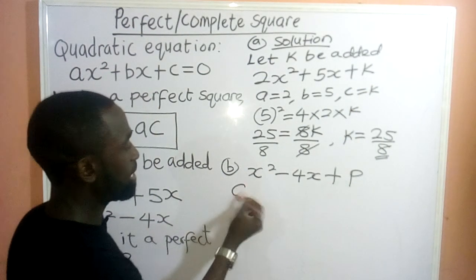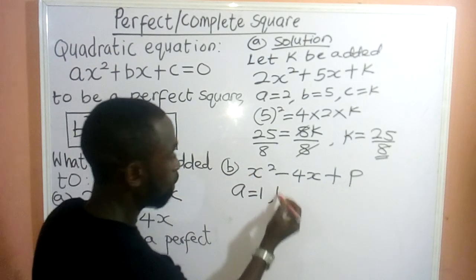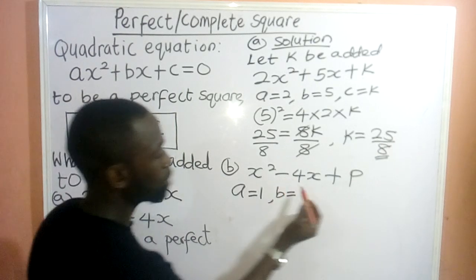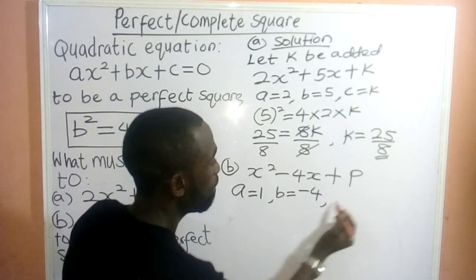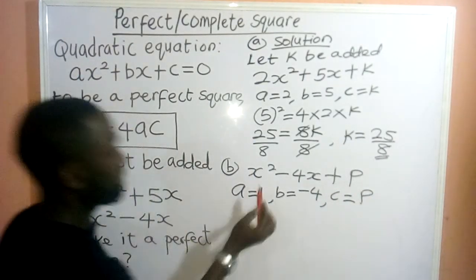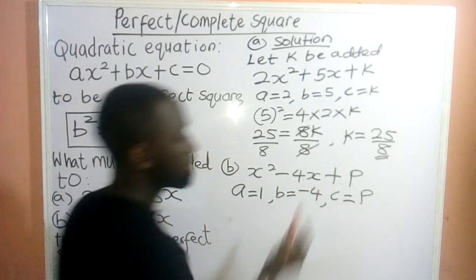So, what do I have here? Our a here = 1. Isn't it? Our a is 1. What do I have here? Class? You have to be very careful with the sign. Our b = -4. And our c = P. So, here, a is 1. B is -4. And our c is P.